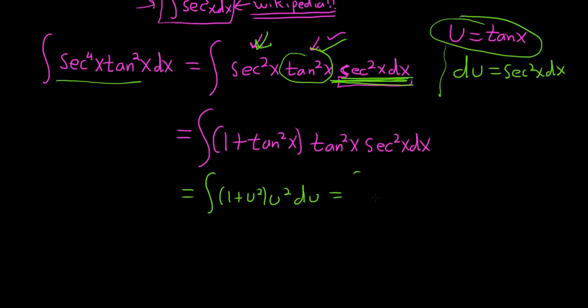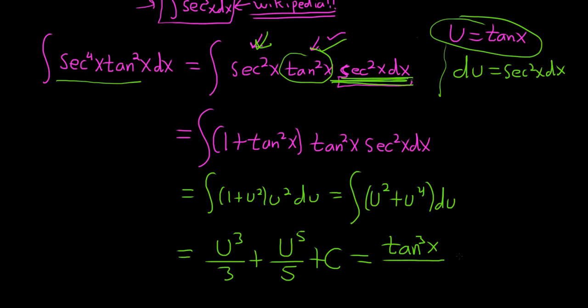Let's distribute this u squared. This will be u squared plus u to the fourth, and then we have our du. Then we just integrate using the power rule. So it'll be u cubed over 3 plus u to the 5 over 5 plus c. And u was tangent of x, so we get tan cubed x over 3 plus tangent to the 5 x over 5 plus c.